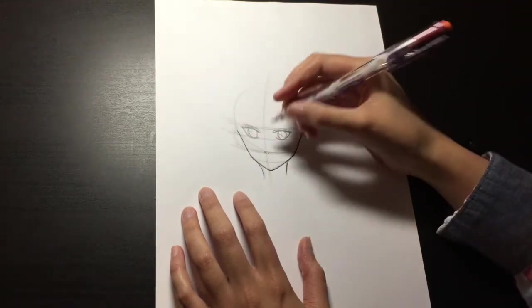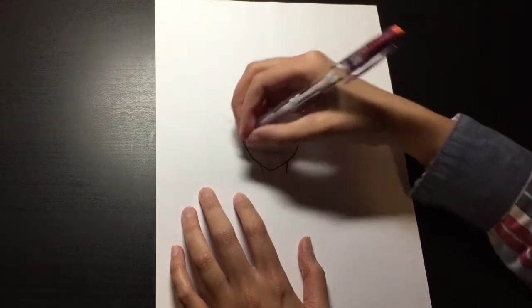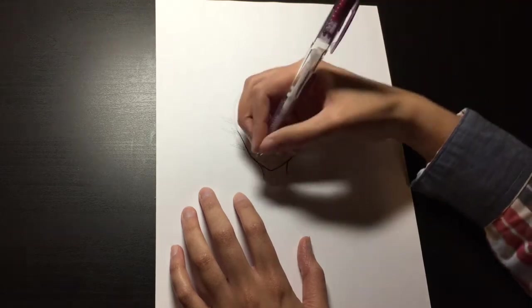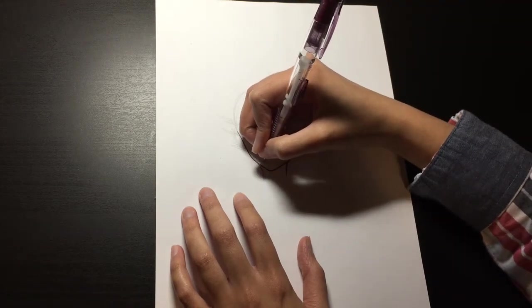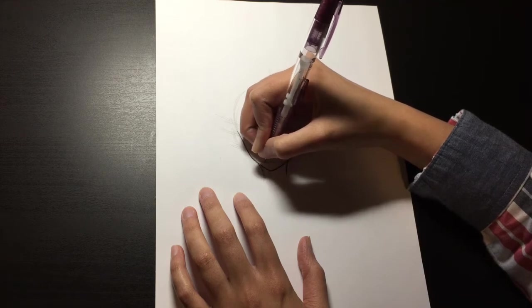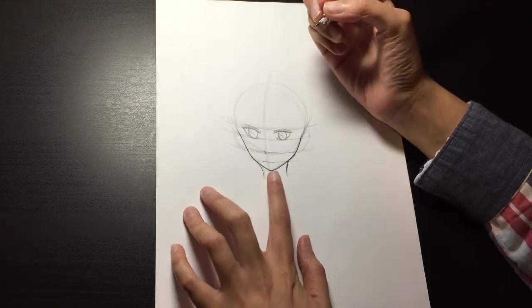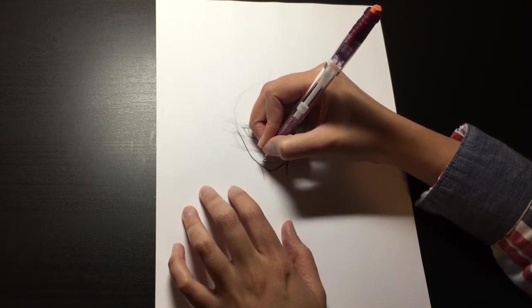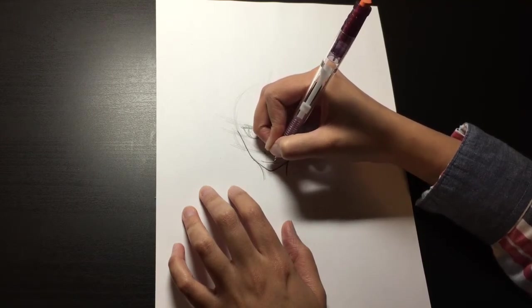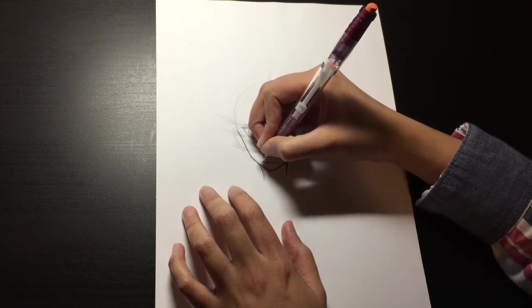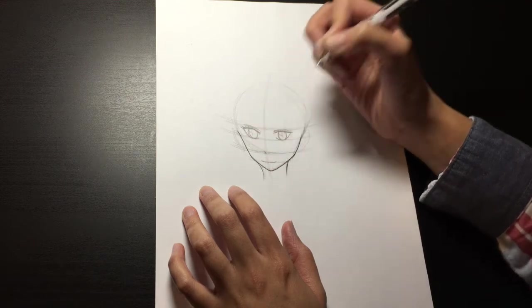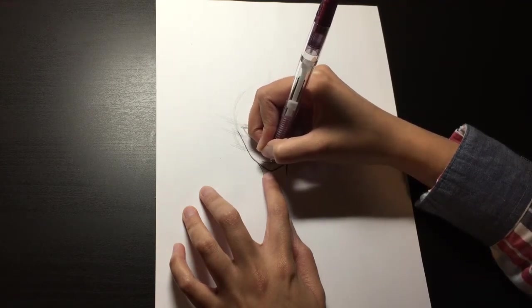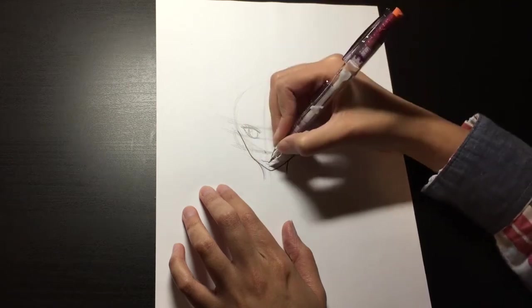And so now we're moving on to the mouth. So like I said in my previous video, for the mouth I generally just draw a straight horizontal line, and then slightly curve up here around the edges just to give it a smile. And if you want to, you can add a little curve at the bottom for the bottom lip.